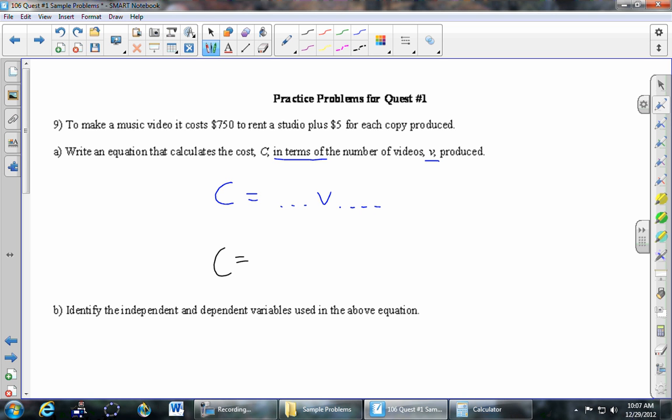C equals... It says the total cost is $750 to rent the studio plus $5 for each copy. So I'm going to put the 750 first: 750 plus 5 dollars for each copy. Five dollars per every copy—V is the number of copies that we're going to make. So that's the equation: C = 750 + 5V.